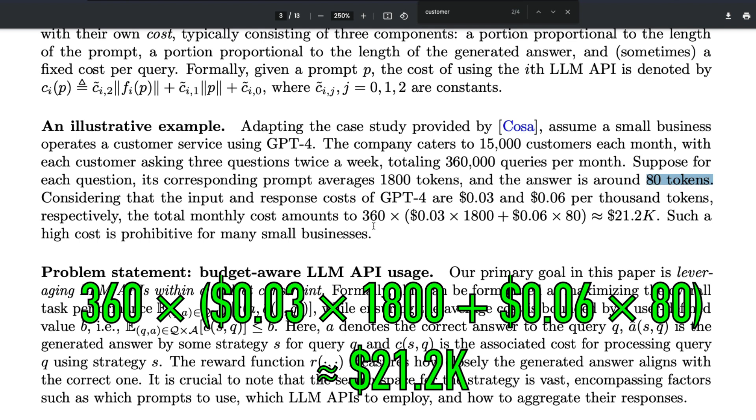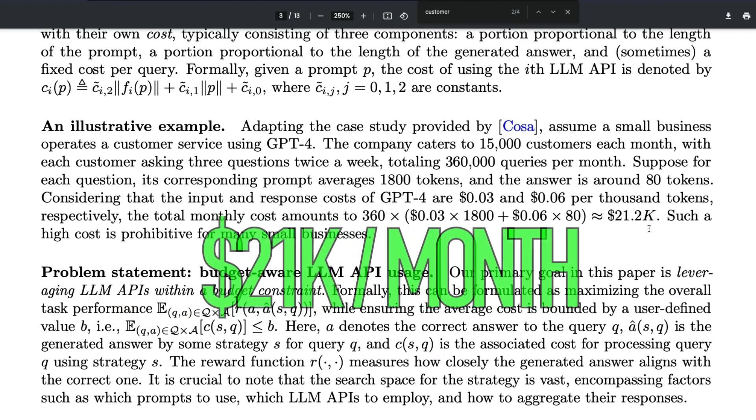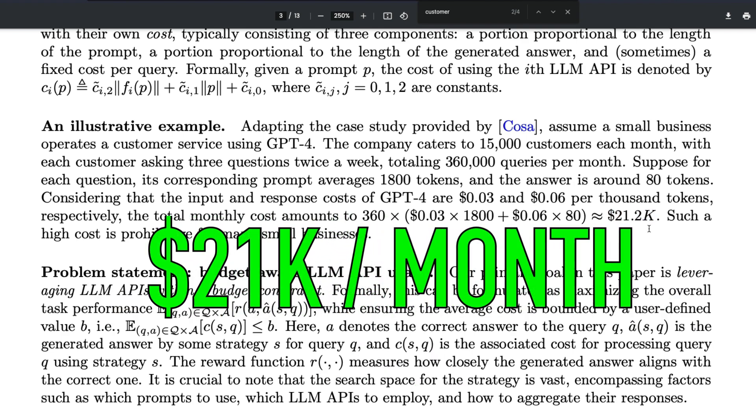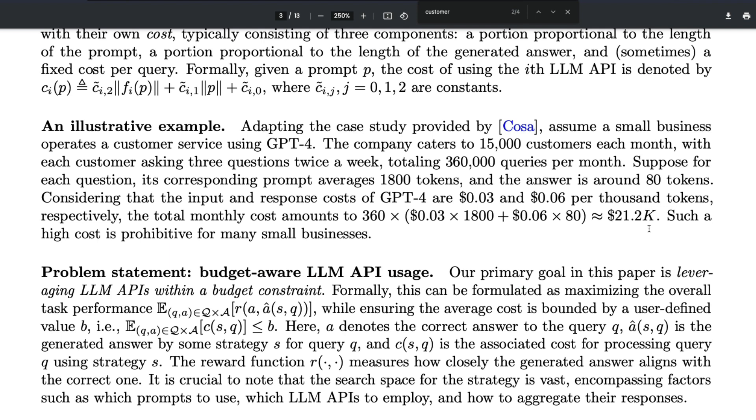Considering the input and the GPT-4 cost, this amounts up to about $21,000. It's a huge amount. How many small businesses can afford such a customer support? Especially if you don't live in a country like the US, these numbers are ridiculously high—in fact, higher than a senior software engineer salary in a lot of countries.